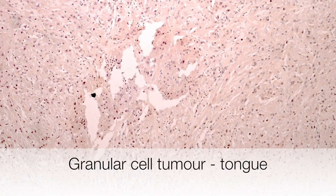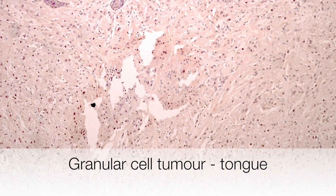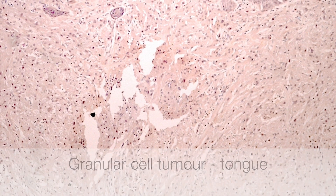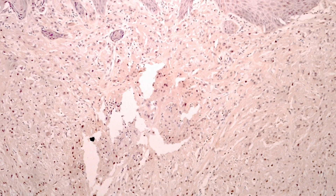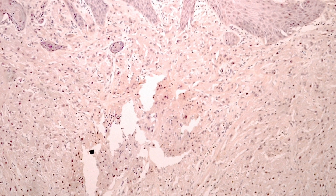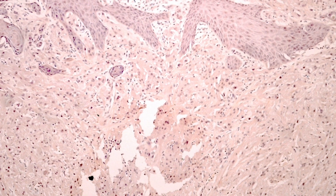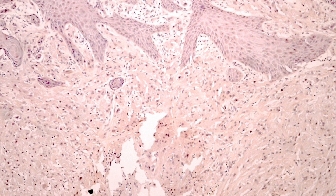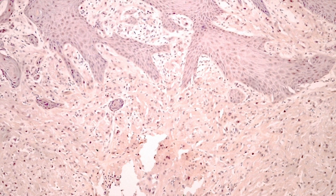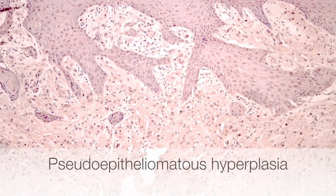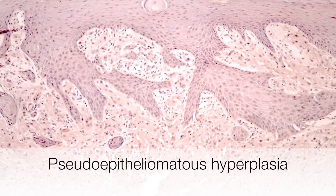Finally, this is a granular cell tumour of the tongue. The granular cell tumour is the pale pink staining area towards the bottom of the picture, and at the top you can see the stratified squamous epithelium. The stratified squamous epithelium has very irregular tongues at the basal aspect that appear to be pushing into the submucosa, which could be easily misinterpreted as infiltrating squamous cell carcinoma. This is a good example of pseudoepitheliomatous hyperplasia in the stratified squamous epithelium overlying a granular cell tumour.